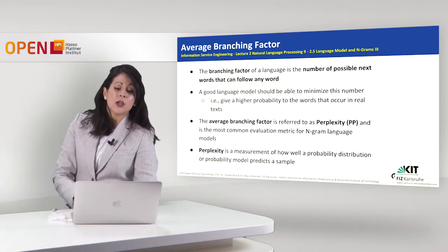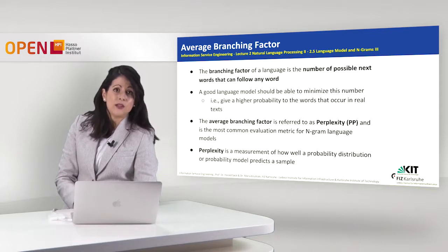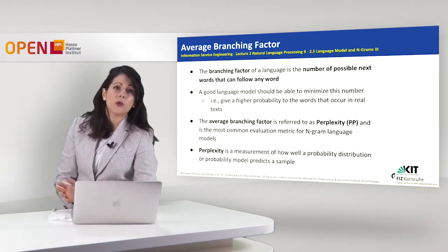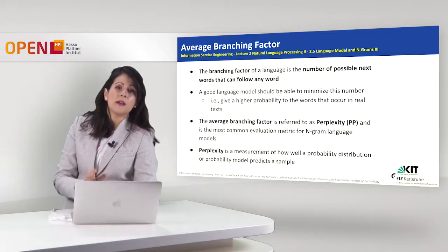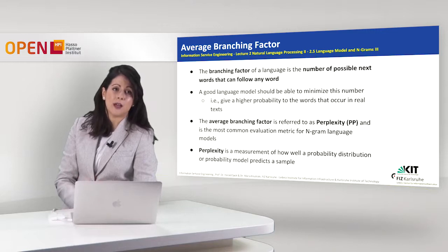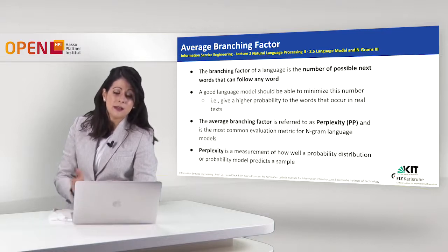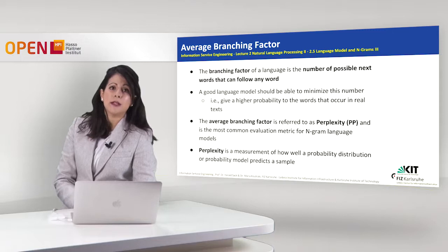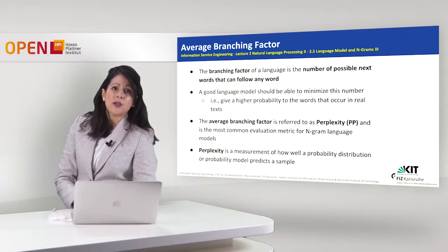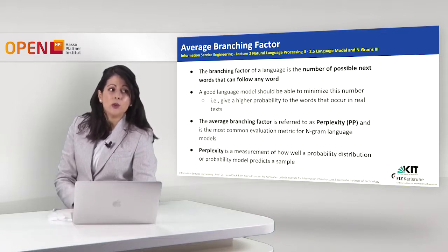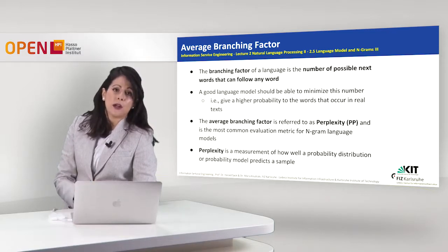What does the branching factor actually mean? The branching factor of a language is the number of possible next words that can follow any word — how many words are likely to follow a specific sentence. A good language model should minimize this number, not have an infinite set of possible next words, but a rather small set. This is usually done by giving higher probability to words that occur in real texts. The average branching factor is referred to as perplexity, denoted by PP, and is the most common evaluation metric for n-gram language models.